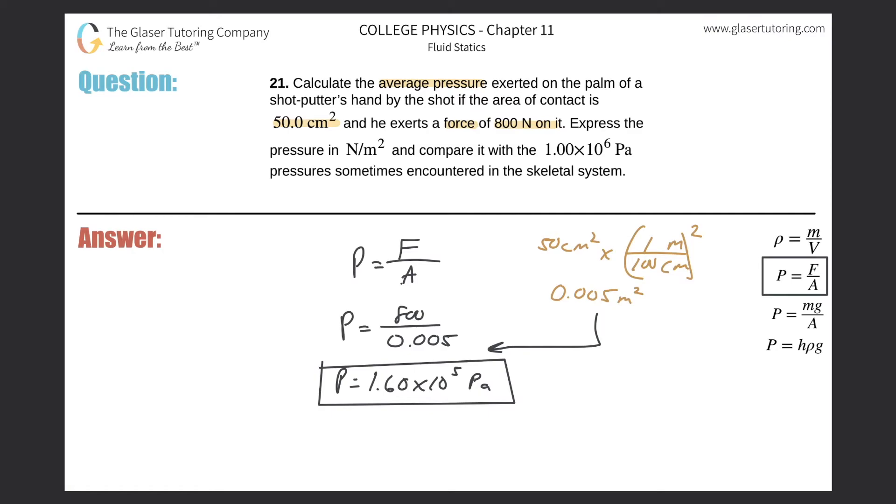And then it says, the next part, it says compare, express it in newtons per meter. All right, so we did that newtons per meter squared, by the way. I meant to say newtons per meter squared. That is equivalent to a Pascal. So we're good. And compare it with the 1 times 10 to the sixth Pascal pressure sometimes encountered in the skeletal system.